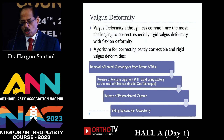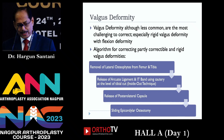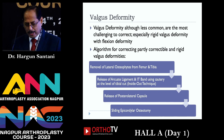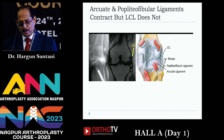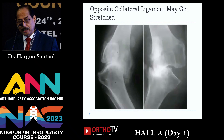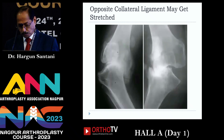Coming to the valgus deformity: these are less common and are the most challenging to correct, especially rigid valgus deformity with flexion deformity. The algorithm is very similar — first remove the lateral osteophytes, then release the arcuate ligament and IT band using cautery at the level of the tibial cut, inside-out technique popularized by Dr. Ranawat. If not enough, release the posterolateral capsule similarly as shown earlier, and lastly, sliding lateral epicondylar osteotomy. MRI shows the LCL is not contracted; it is the poplitofibular ligament and arcuate ligament which are contracted. The superficial medial and lateral collateral ligaments do not contract but do get stressed, and sometimes you need sliding osteotomy to balance them, or occasionally a constrained implant.